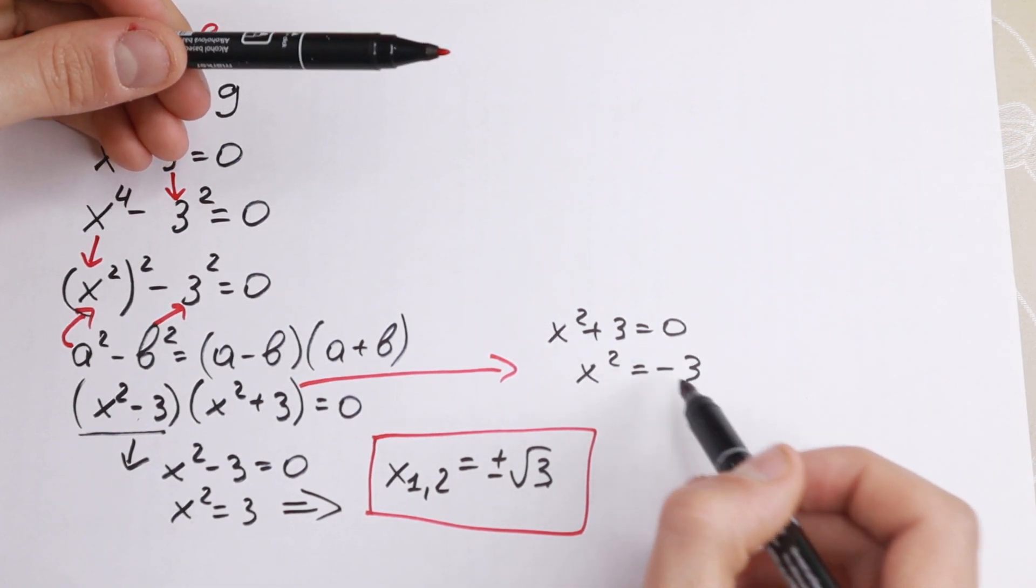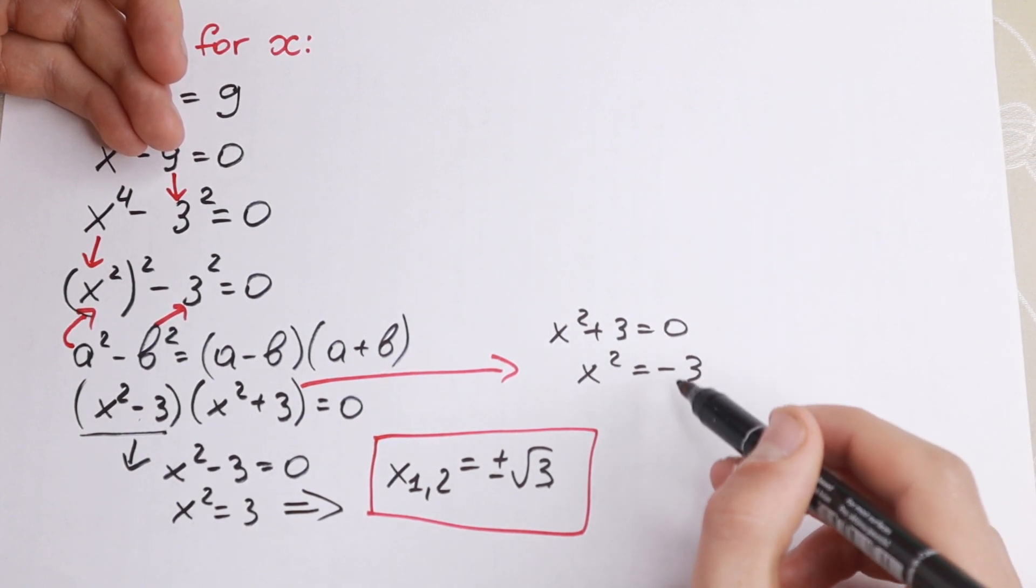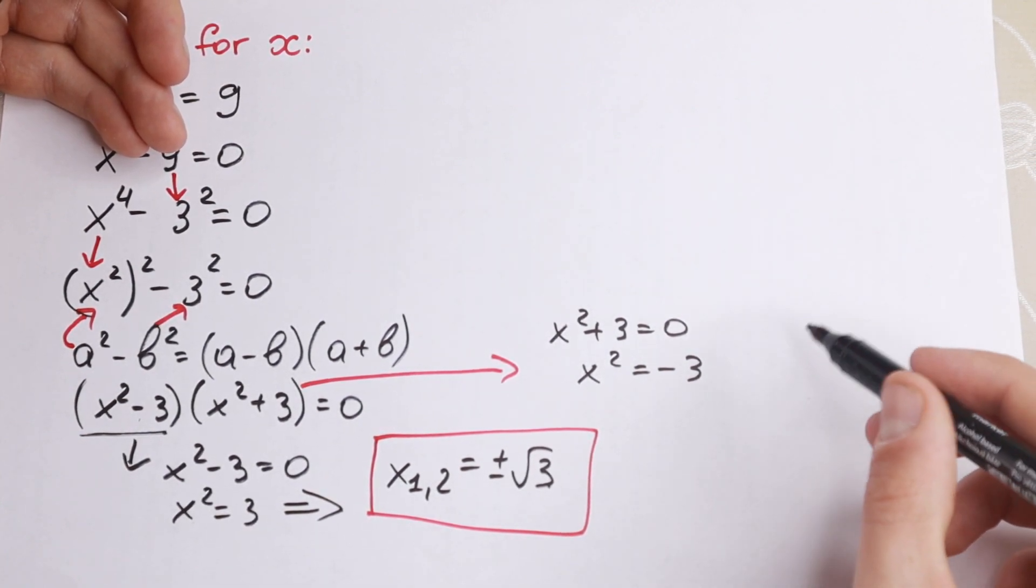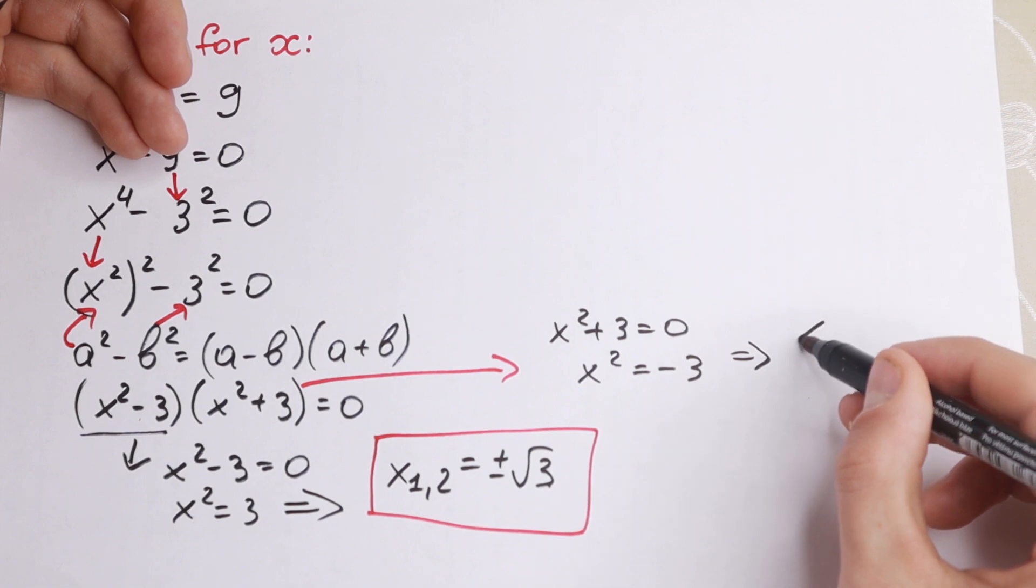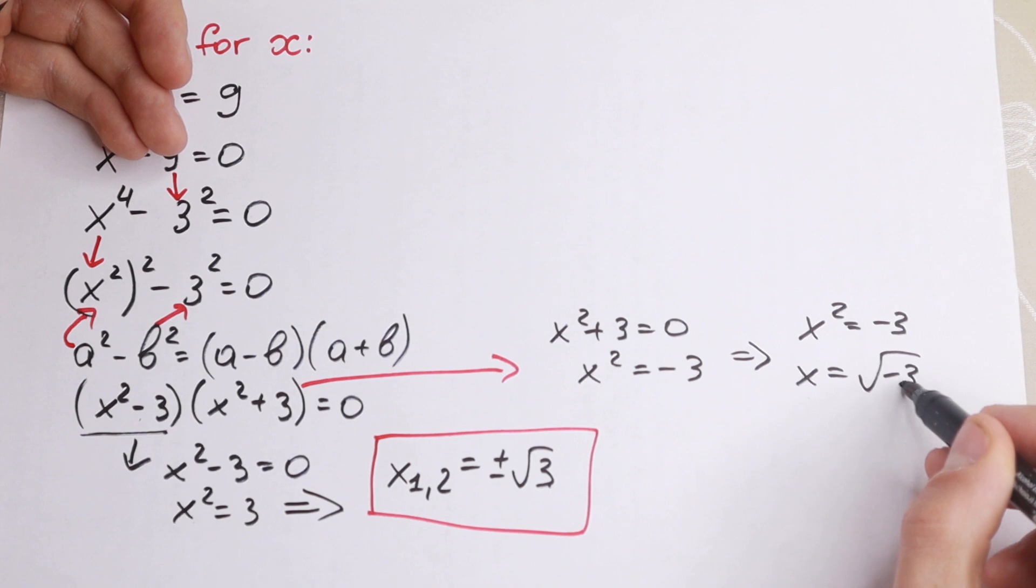And if we bring this, x squared equal to minus 3, we will have a really interesting case because x squared does not reach this constant, because x squared is always positive. It cannot get this negative sign.